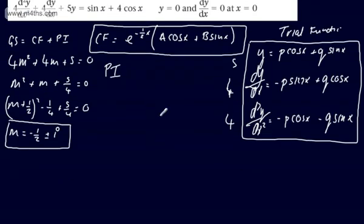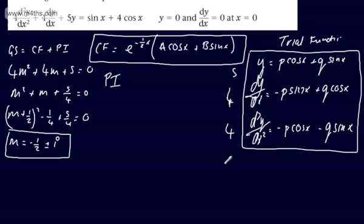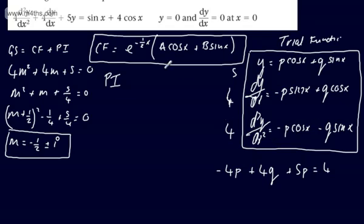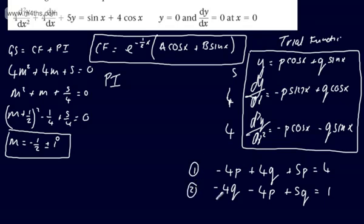Considering terms in cosine: −4p + 4q + 5p = 4, which is equation 1. Considering terms in sine: −4q − 4p + 5q = 1, which is equation 2. Tidying these up: equation 1 gives p + 4q = 4, and equation 2 gives q − 4p = 1.